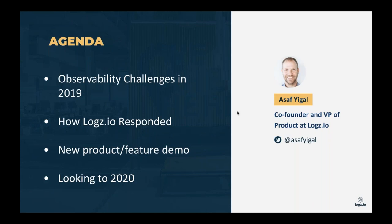A few things we're going to cover: we're going to talk about the concept of observability and what we've seen over the past year, and how we're dealing with the growing challenges of increasing environment complexity. We'll talk about our plans and how we're responding to those challenges, the new products we released in 2019, and the new products we're going to release in 2020, along with an overall view of the platform.